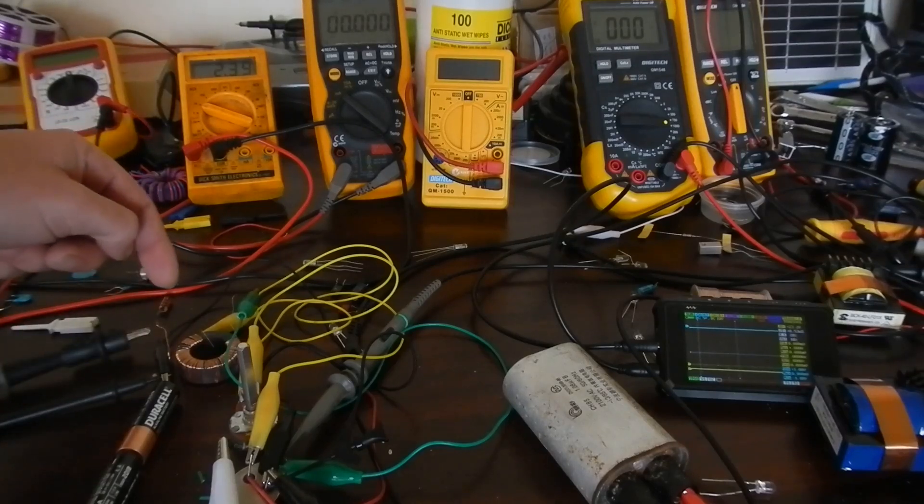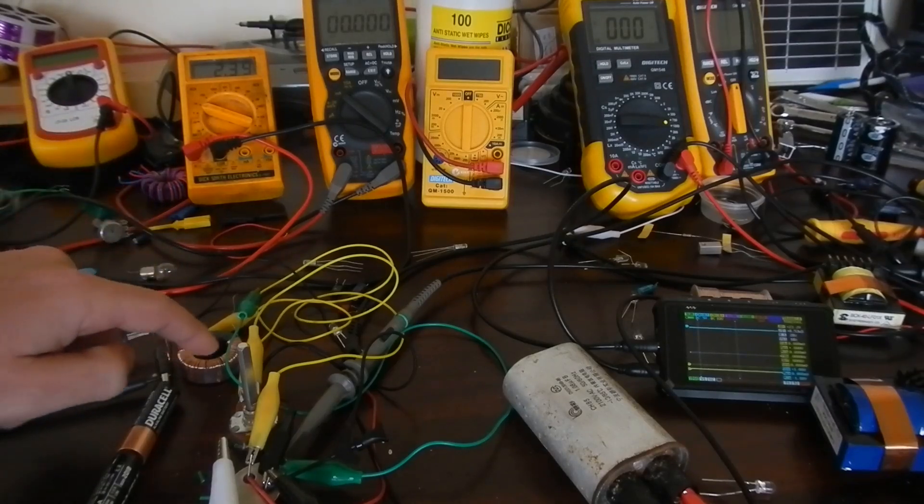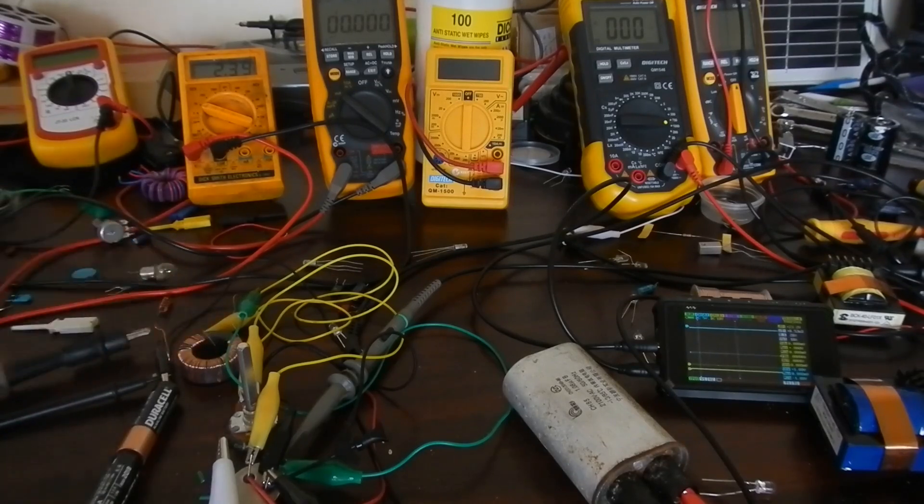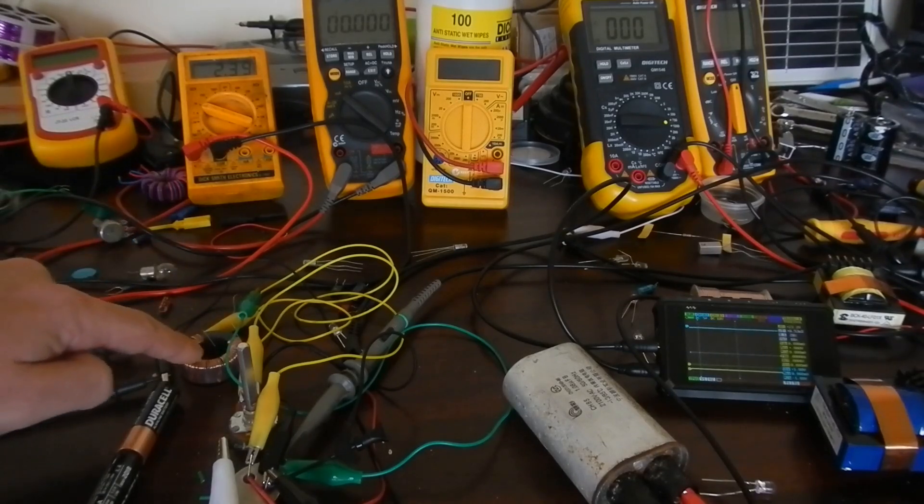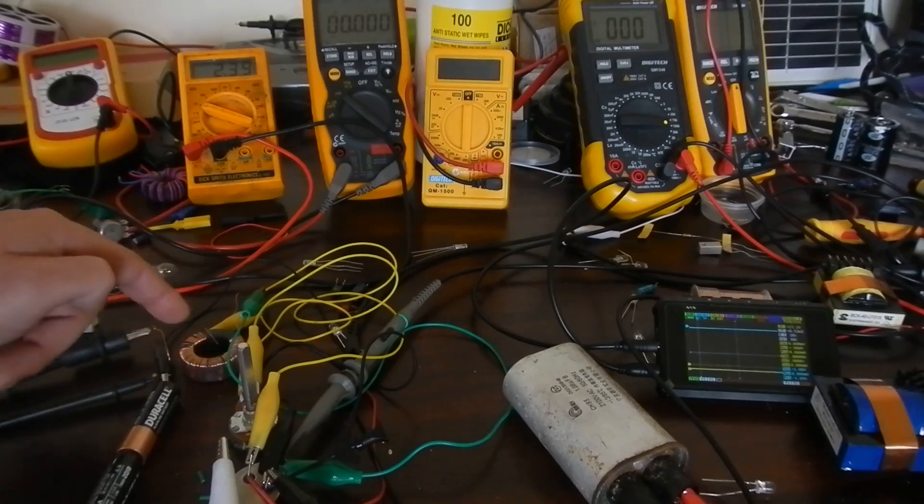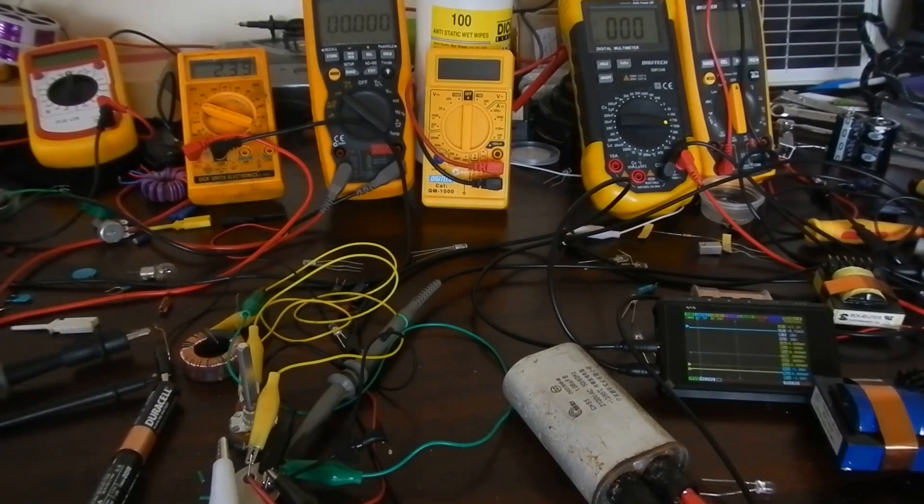This works with many different coils, although it does help to have a much longer winding connected to the collector of your transistor. I've got about 170 turns on the collector side on this one and about 17 turns on the base side.